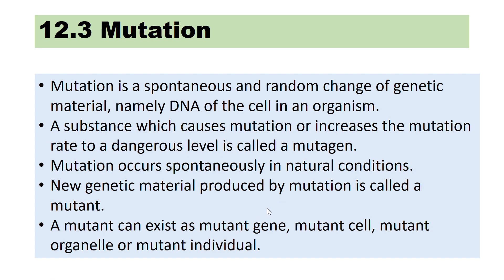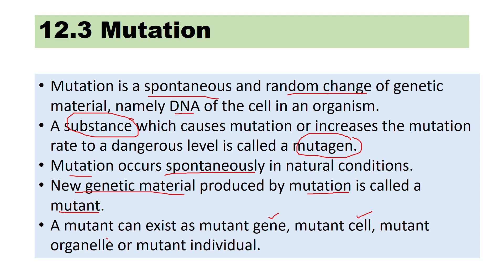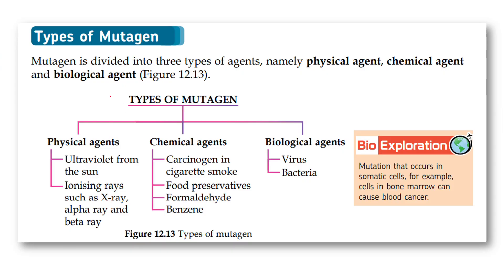Let's look into mutation. The definition: it is a spontaneous and random change of genetic material — the DNA of the cell in an organism. A substance that causes mutation is known as a mutagen. Mutation occurs spontaneously in natural conditions. A mutant is a new genetic material produced by mutation. It can exist as a mutant gene, mutant cell, mutant organelle, or even a mutant individual.